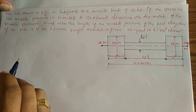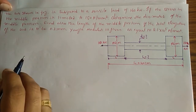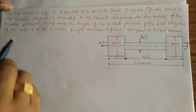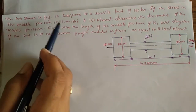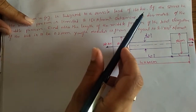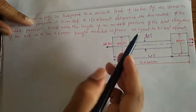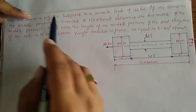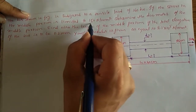Hi friends, today I am going to solve a problem on a bar subjected to tensile load having different cross-sectional areas. A bar shown in the figure is subjected to a tensile load of 160 kilo Newton. If the stress in the middle portion is limited to 150 Newton per mm square...